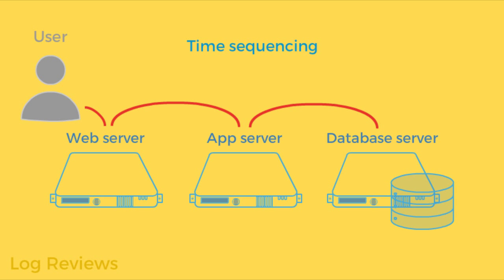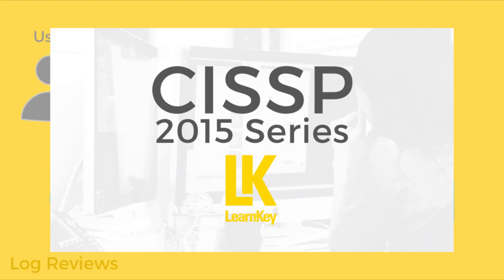Well, those are three different server machines. They may be in different data centers or they may be in the same place. But invariably, their clocks are going to be slightly offset — they may be very, very close, but they may be wildly different. So you have to be careful about synchronizing clocks with real time so that you can create a sequence of events throughout your system.